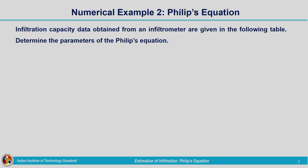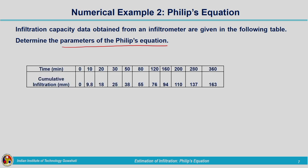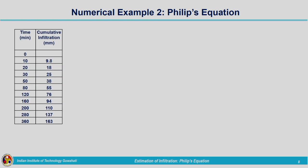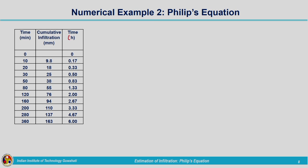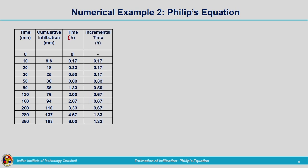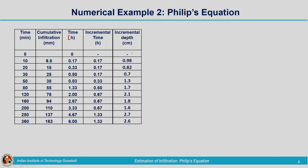We can solve another example which can be utilized for finding out the Phillips parameters, that is hydraulic conductivity and sorptivity. The question is: infiltration capacity data obtained from an infiltrometer are given in the following table — determine the parameters of Phillips equation. Time and cumulative infiltration are given. Time in minutes is converted to hours, incremental time in hours is calculated, and incremental depth is converted from millimeters to centimeters.